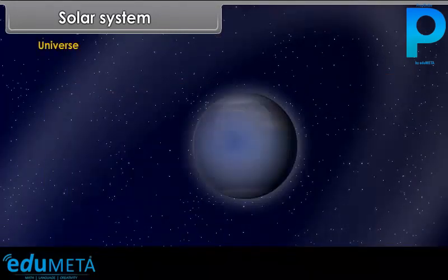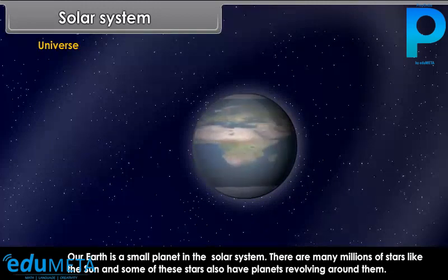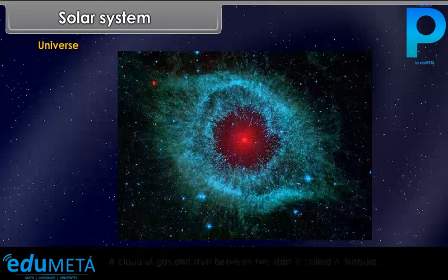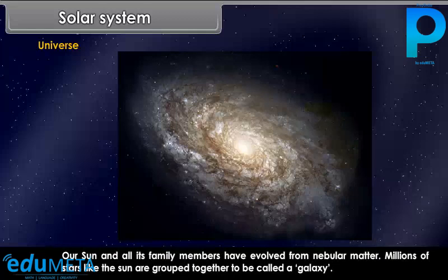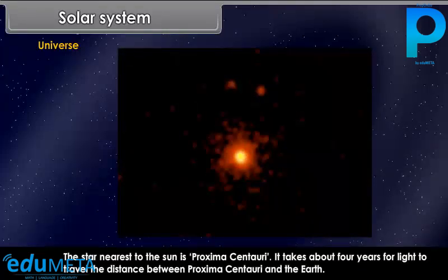Our Earth is a small planet in the solar system. There are many millions of stars like the sun, and some of these stars also have planets revolving around them. A cloud of gas and dust between two stars is called a nebula. Our sun and all its family members have evolved from nebular matter. Millions of stars like the sun grouped together are called a galaxy. The galaxy in which the sun is situated is called the Milky Way or Akash Ganga. The universe consists of millions of such galaxies. The star nearest to the sun is Proxima Centauri. It takes about four years for light to travel the distance between Proxima Centauri and the Earth.